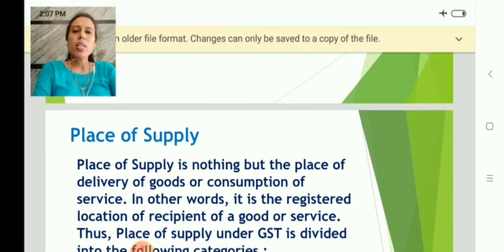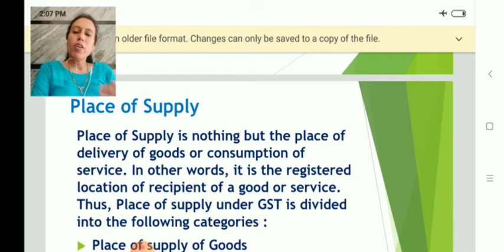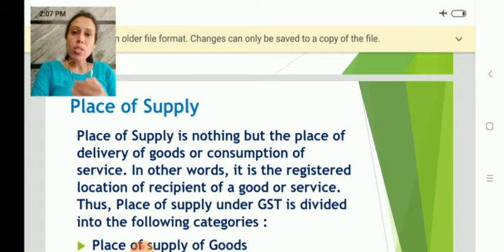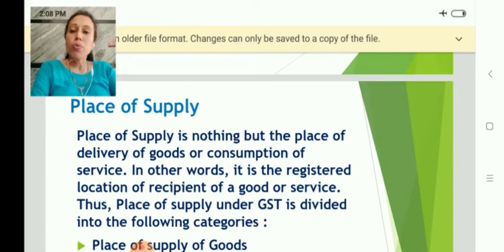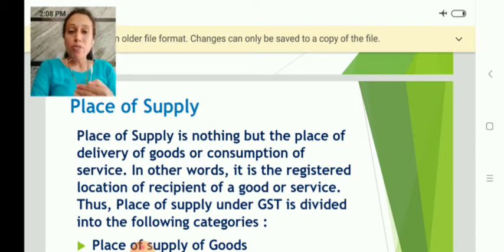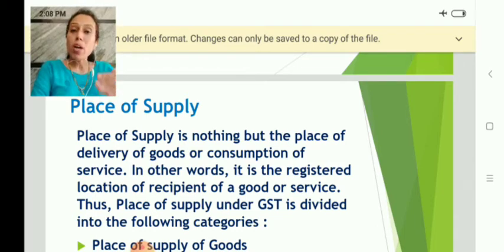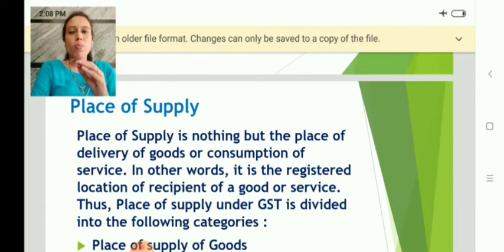Now let us see what is the meaning of place of supply. While determining the taxability and levy of tax, the place of supply is very important. Sometimes a concern may have branches in different places and one branch can instruct to supply goods to another branch. In such cases, which will be the place of supply? As per the Act, place of supply is nothing but the place of delivery — where the goods are delivered, that is considered as the place of supply.